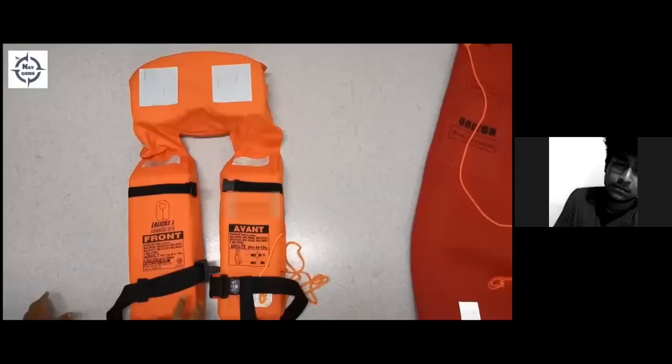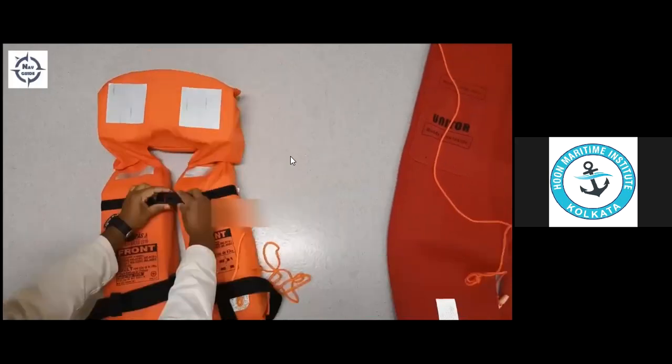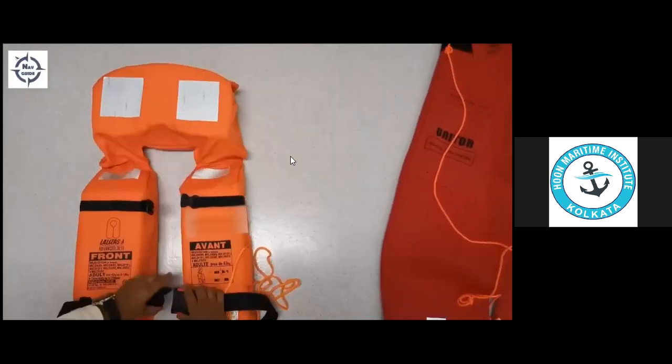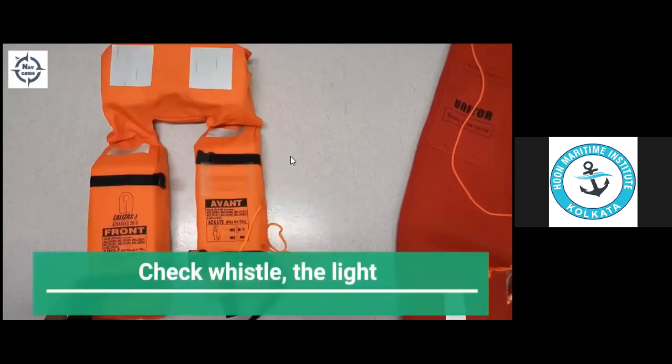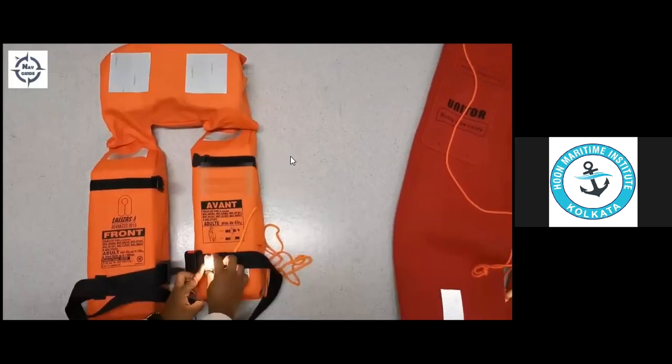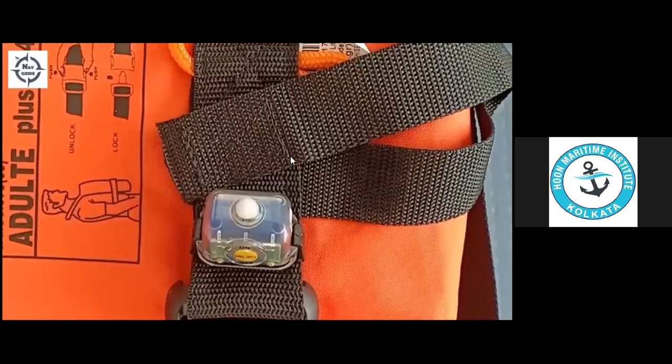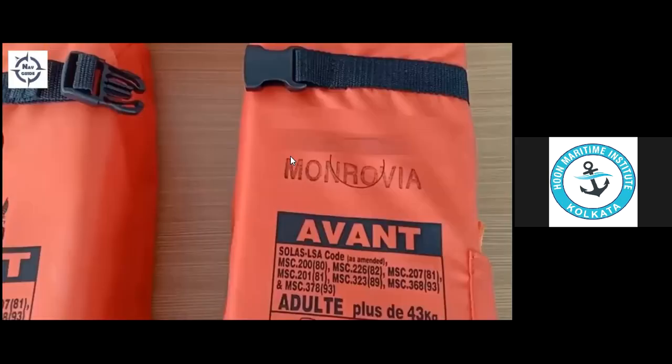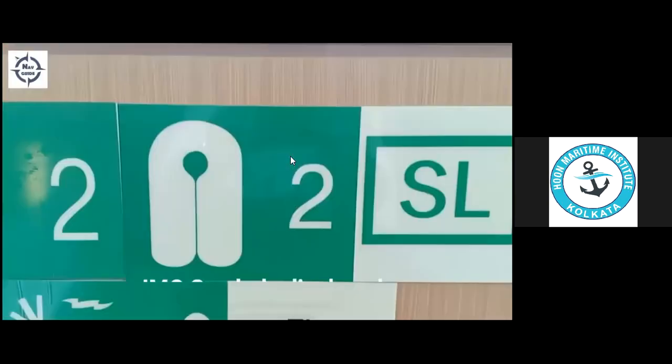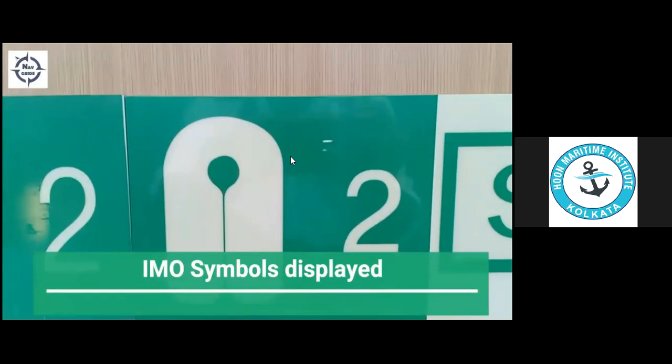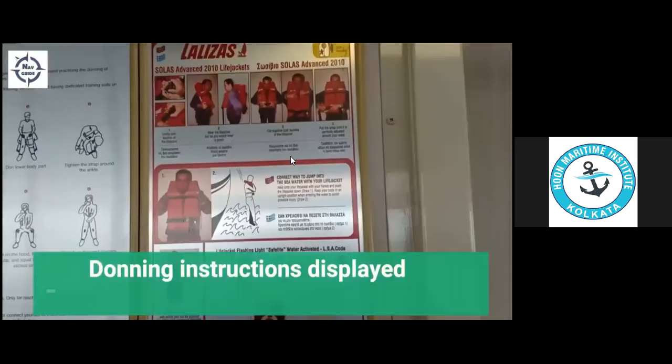Check the condition of the belts, buckles, and retro reflective tapes. Belts and buckles should be okay. Check the condition of the whistle, ensure it's connected properly. Check the lights are working fine and verify the expiry dates of the lights. The vessel name and port of registry must be marked clearly. IMO symbols should be clearly marked at the storage areas. Donning instructions should be put up in common places like alleyways.